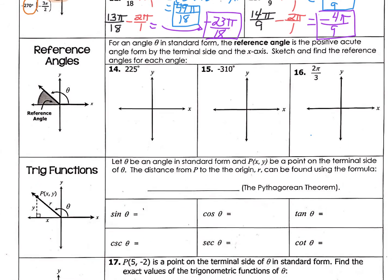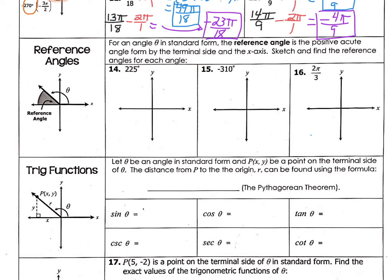So then we're going to start and look at something called a reference angle. This is what a reference angle is: it always comes from the x-axis. So for an angle in standard form, the reference angle is the positive acute angle formed by the terminal side and the x-axis.